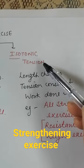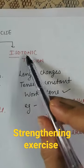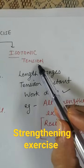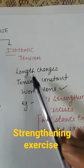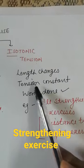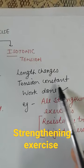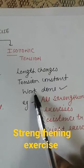On the other hand, most important are isotonic exercises. 'Iso' means same, 'tonic' means tension. Here the length will be changed while the tension remains constant.